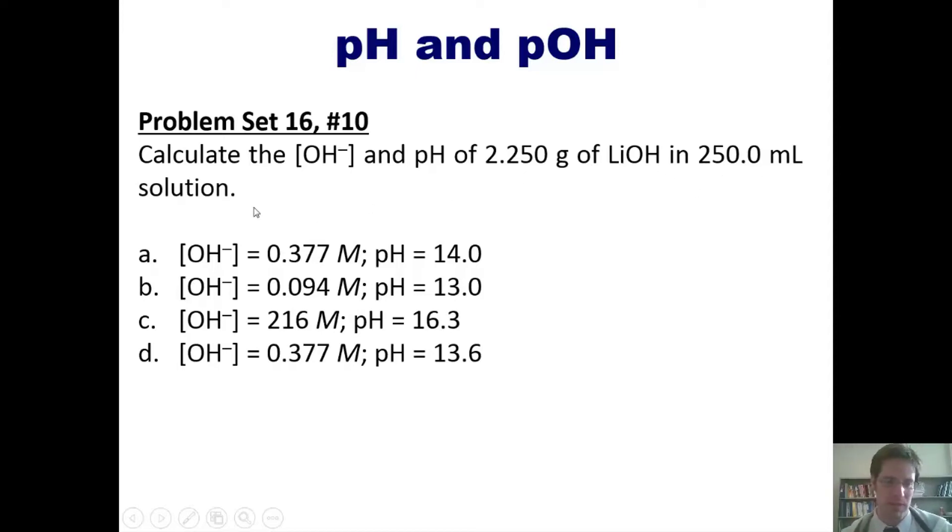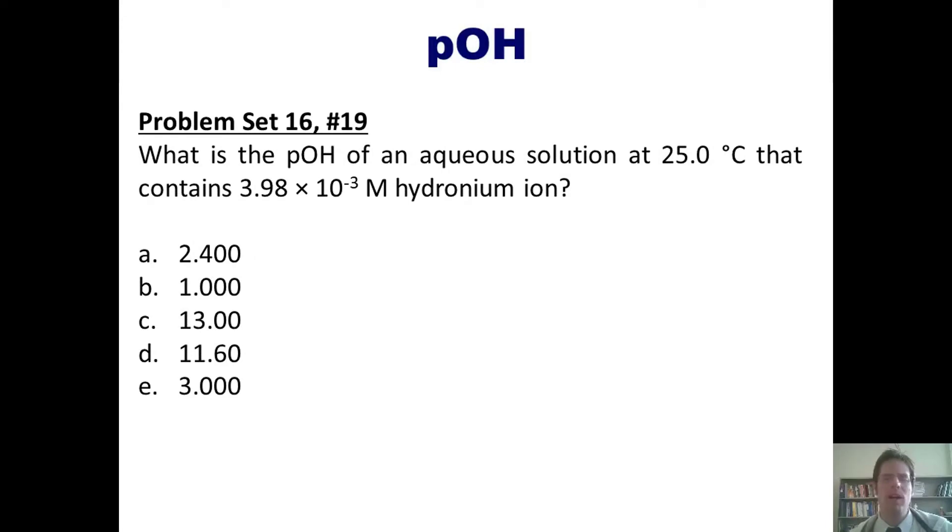And now our last question: calculate the hydroxide ion concentration and pH of 2.25 grams of lithium hydroxide diluted in 250 milliliter solution. And lastly, what is the pOH of an aqueous solution at 25 degrees C that contains this concentration of hydronium? As always, you're welcome to click the link here if you like, after attempting it on your own, to see me do it for you on the board.